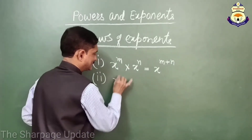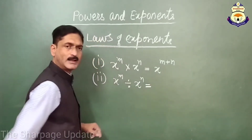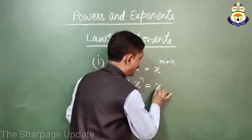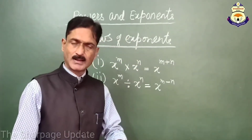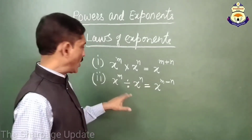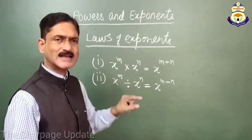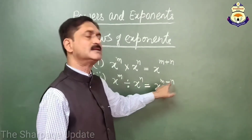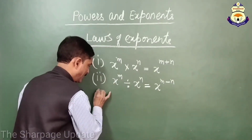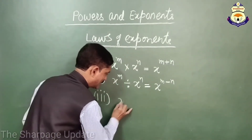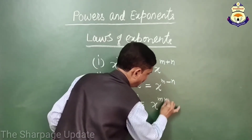According to the second law, x raised to the power m divided by x raised to the power n is equal to x raised to the power m minus n — when the base is the same in division, we subtract the powers. And the third law of exponents states that (x^m)^n equals x raised to the power m times n.